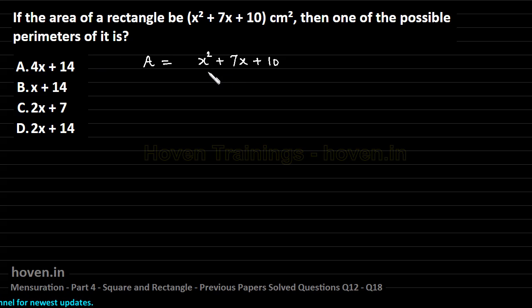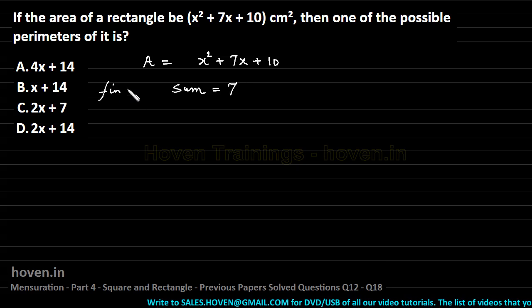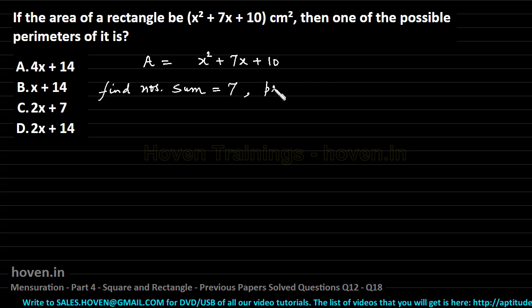We know that the coefficient of x square is 1. So the factorization can be done by finding two numbers whose sum is 7 and product is equal to 10.